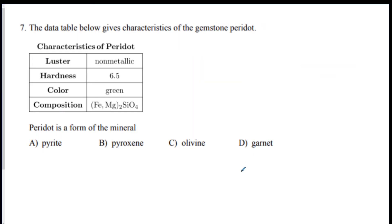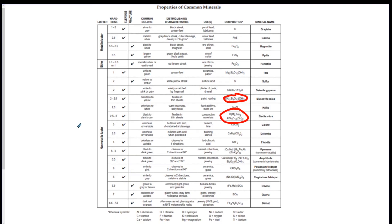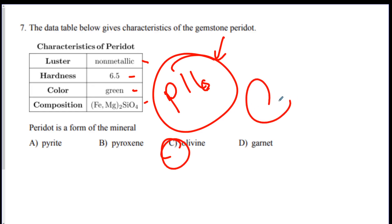Number seven: the data below gives characteristics of the gemstone peridot. Peridot is a form of what mineral? Go to page 16 and look for non-metallic luster, hardness of 6.5, green color, and that specific chemical formula. Non-metallic, 6.5, green — we're on the right track — and there's the formula. So this is olivine. Alright, that's minerals in a nutshell. Good luck, and I'll see you on the next one. Bye-bye.